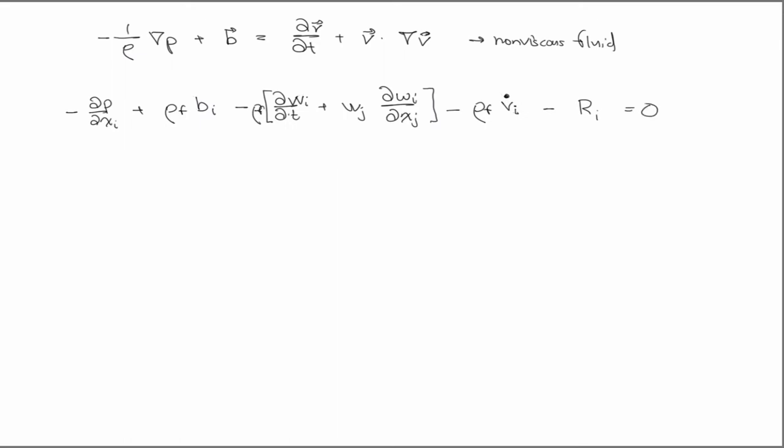And so right now I'm just going to call it R, right? And so this is basically the resistance, or the viscous resistance of the fluid W, the fluid velocity W, with respect to the solid V.